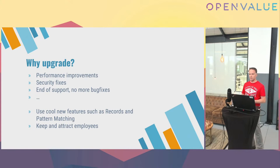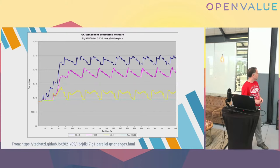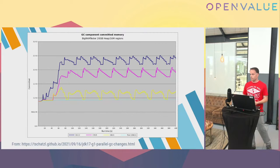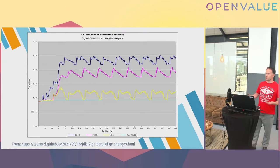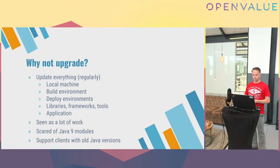This shows how much performance improved — in this case for committed memory. The highest one is Java 16, then purple is Java 17, and the other one is 18. Don't trust statistics you haven't verified yourself — it really depends on your use case, whether you have a web application or batch processing. If you want to know, simply run a proper performance test with the two different versions.